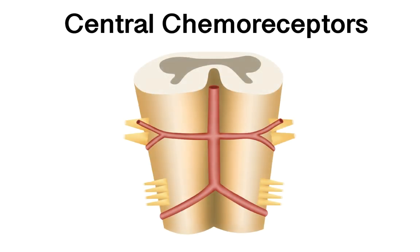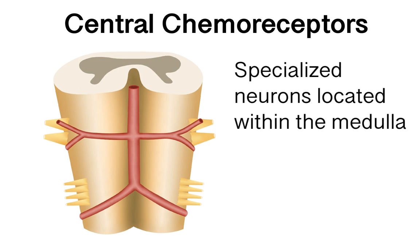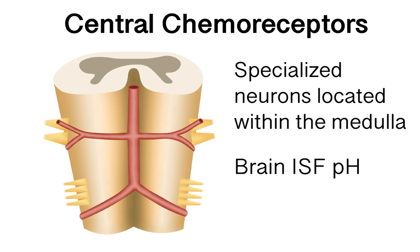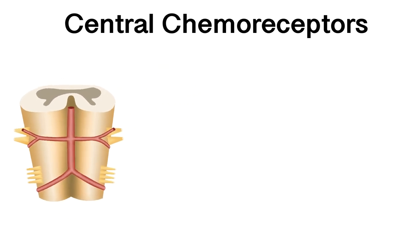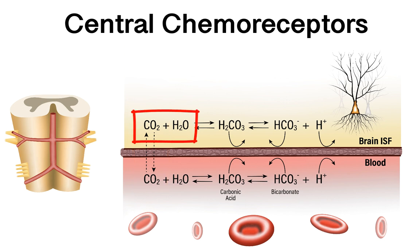The other type of chemoreceptor are central chemoreceptors. Central chemoreceptors are specialized neurons located within the medulla. Technically, central chemoreceptors are sensitive to brain interstitial fluid (ISF) pH — the pH of the extracellular fluid of the brain. However, on a moment-to-moment basis, the brain ISF pH is determined by the arterial partial pressure of carbon dioxide, because arterial CO2 freely diffuses across the blood-brain barrier and reacts with water within the brain interstitial fluid, resulting in the production of free protons.